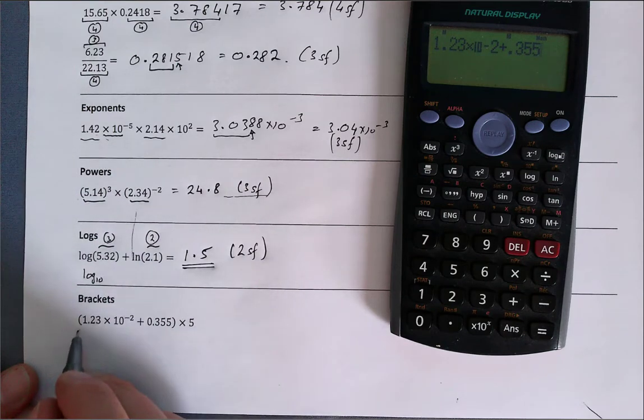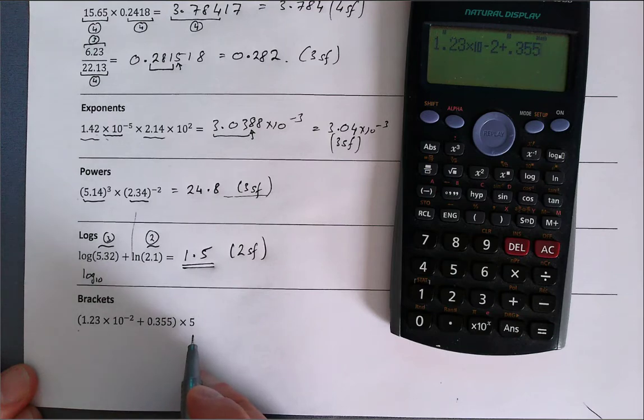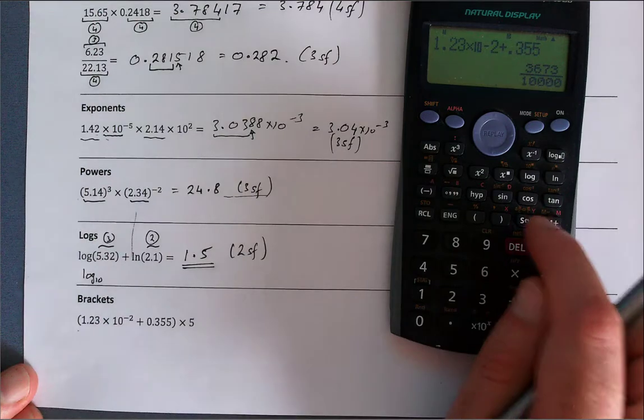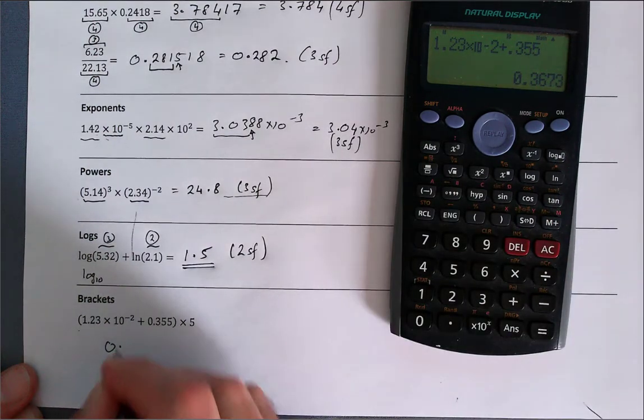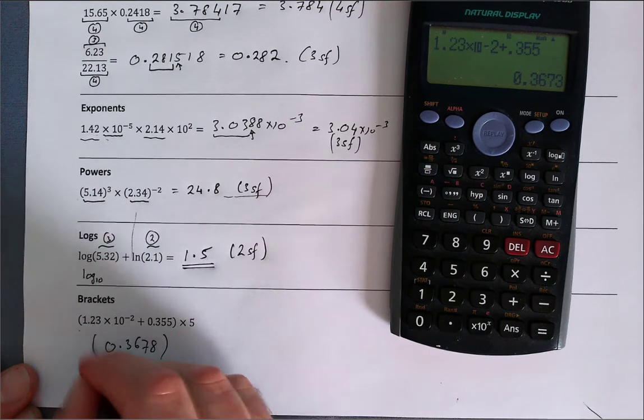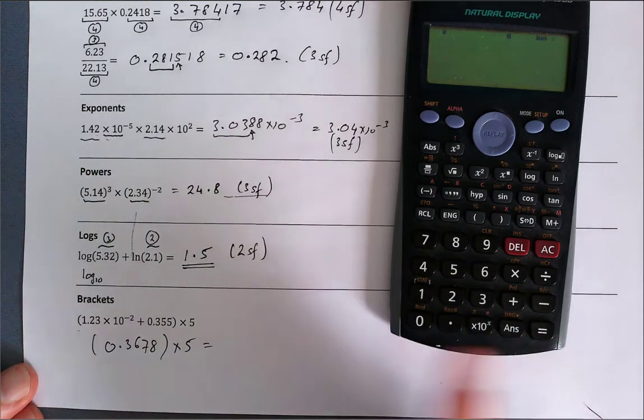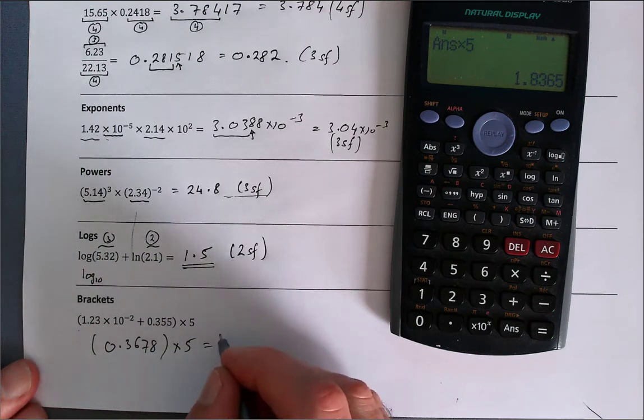So I'm going to add those two things first. Again, it's giving me this annoying fraction. I can just press SD. So that's 0.3678 in the brackets, and now I just want to multiply that by five. And it's good to show your workings like this, because if you make a mistake along the way, at least people can see your workings. So I've got 1.8365. I'm limited to three significant figures here, three significant figures here, so that's 1.84 to three significant figures.